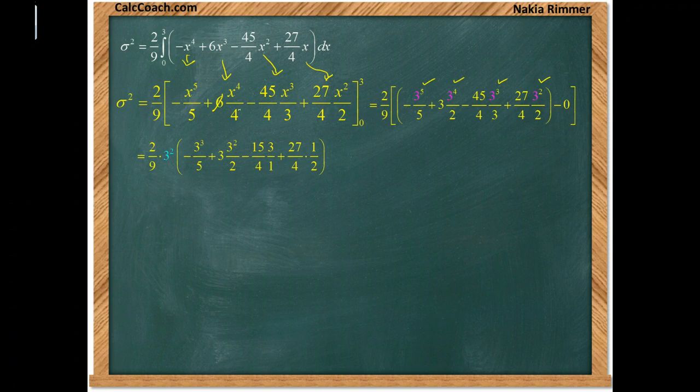Well this 6 and 4 got us our 3 halves. 45 can cancel with the 3 and give us a 15 and that's how we got that simplified. But we can even do more. What else can we do? Well the 3 squared that you pulled out, conveniently there's a 9 from the 2 9ths. Those can go away.